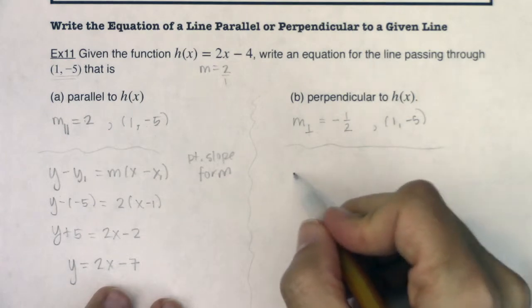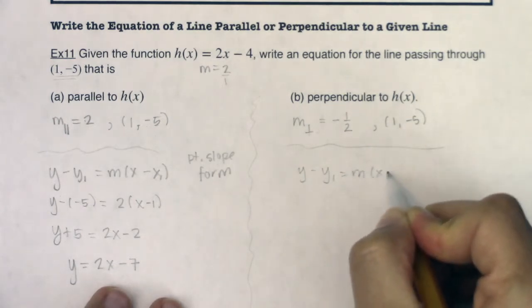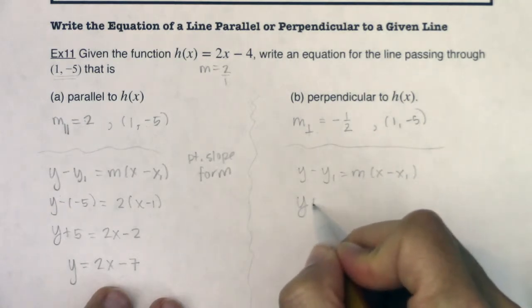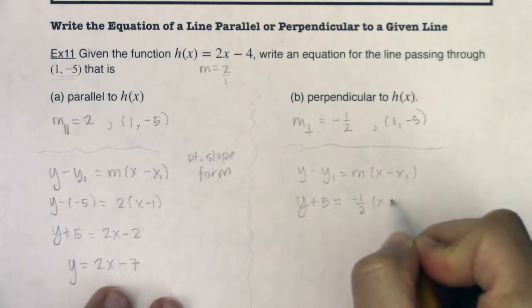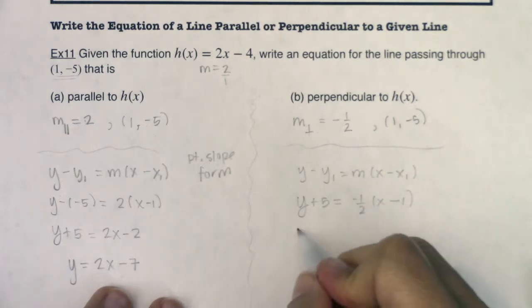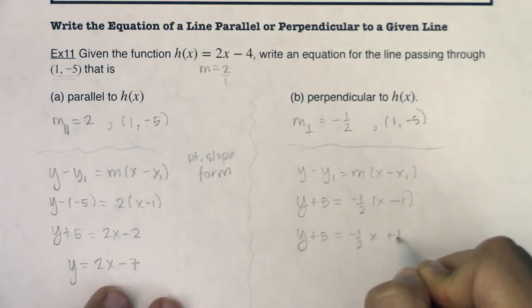Now I'm going to use the point slope form here. Well, let's see what we get. So this is going to ultimately be y plus 5. This time it'll be negative 1 half times (x minus 1). So we're going to have y plus 5 equaling negative 1 half x plus 1 half.